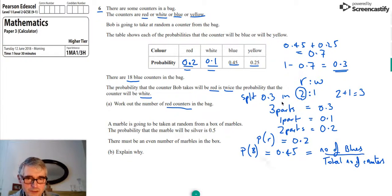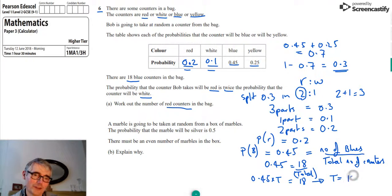So 0.45 is equal to 18 divided by the total. If we rearrange that, let's multiply both sides by the total. We'll get 0.45 times by T for the total equals 18. And it will follow from that, that if we divide both sides by 0.45, that the total is equal to 18 over 0.45. If we do that on the calculator, 18 divided by 0.45, we get 40. So we can see there's 40 counters in total.